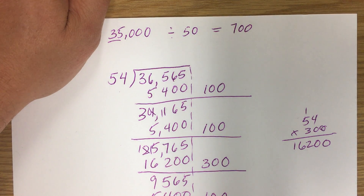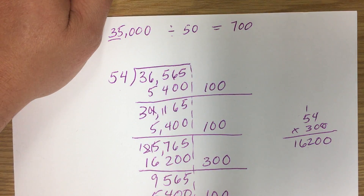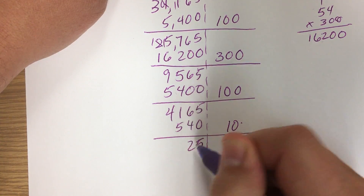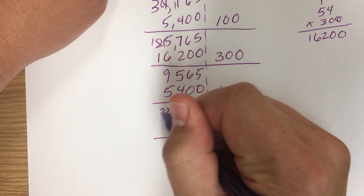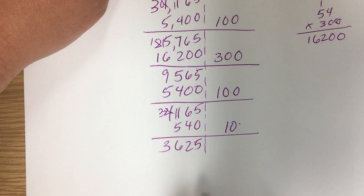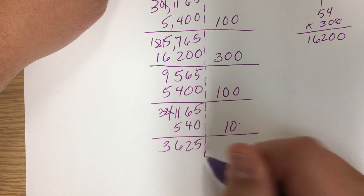Now I can't use 100 again because it would be larger than what's remaining. So I'll go with 10. 10 times 54 is 540, so I subtract 540. I have 5,241 left. Then I have 536 remaining.